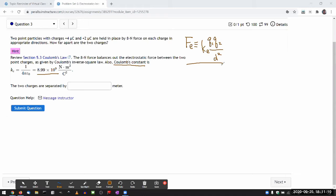Now let me read the question. It says two point particles with some amount of charges Q1 and Q2 are held in place by some amount of force. Let me use F naught on each charge in appropriate directions. How far apart are the two charges? Let me start drawing the pictures so that I can make sure that I didn't miss anything. So I have one charge Q1, which will be plus 4 microcoulomb, and I have another charge Q2, which will be plus 2 microcoulomb.